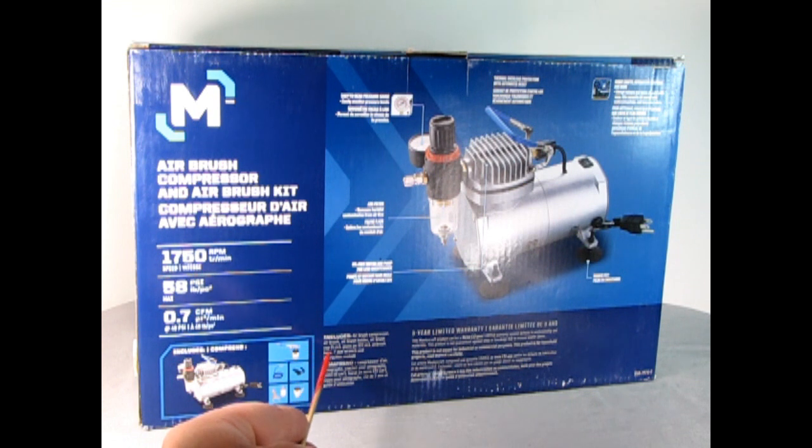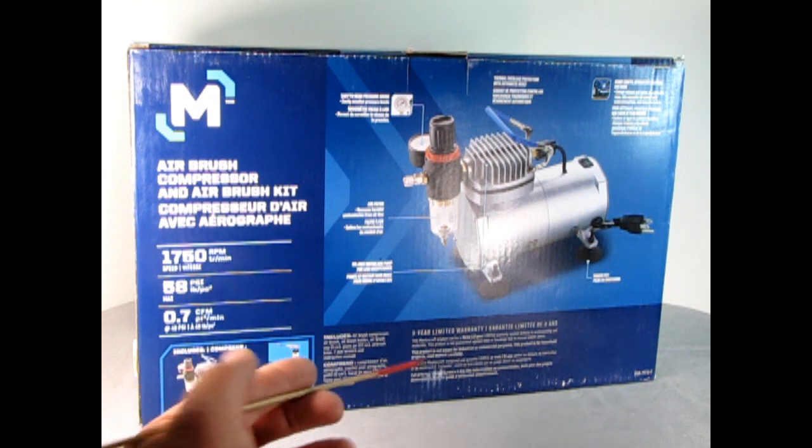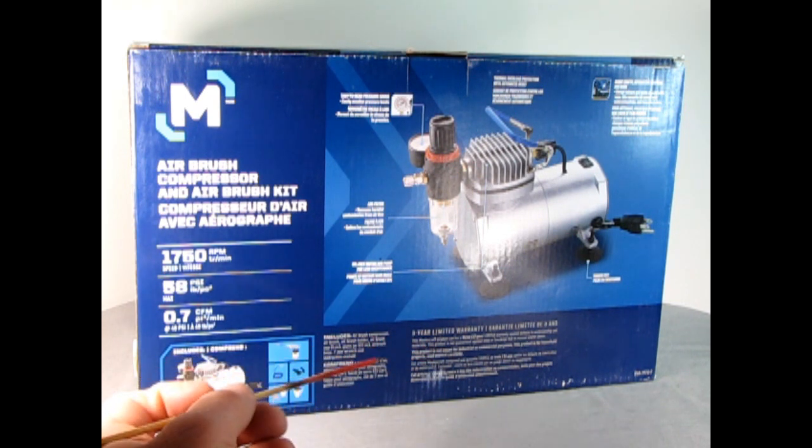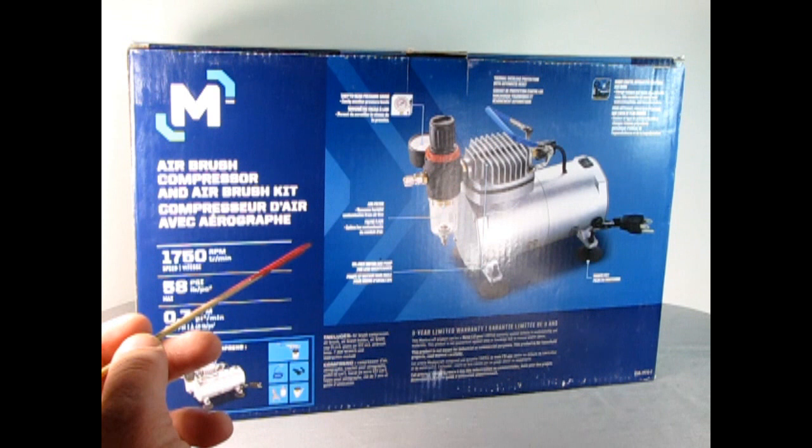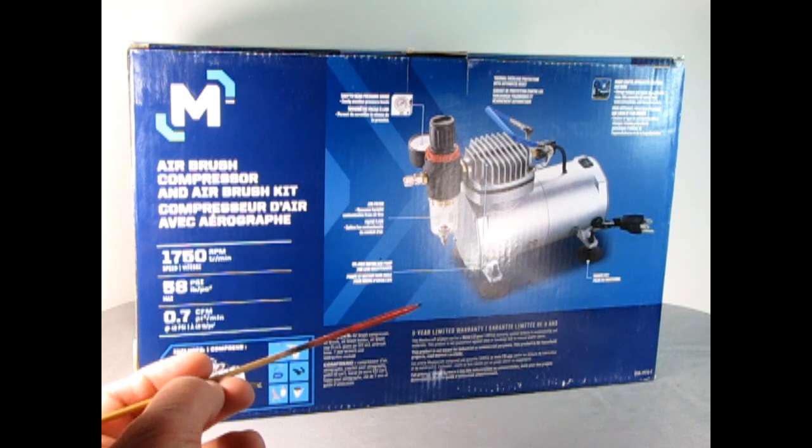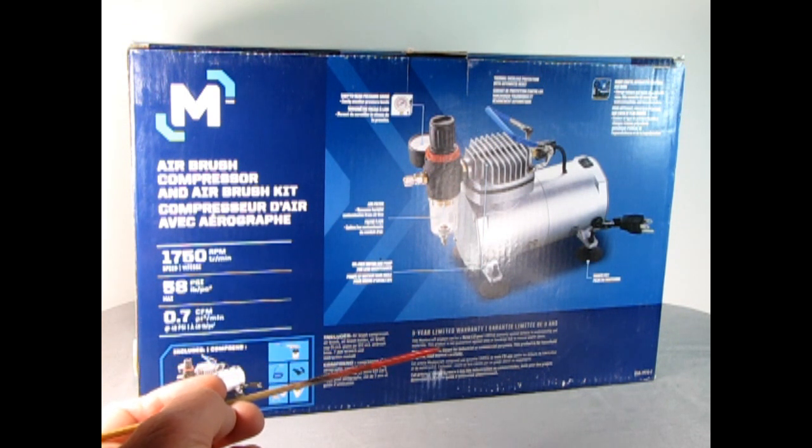It includes airbrush compressor, airbrush, airbrush holder, airbrush cup 5cc, glass jar 22cc, airbrush hose, 7 millimeter wrench and instruction manual. There's a three year limited warranty, so make sure you fill that out and send it in in case it blows up in year two.